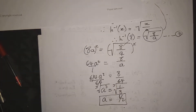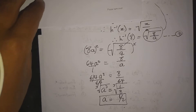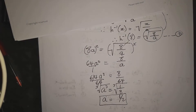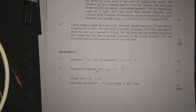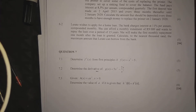So a = 1/2 is our final answer for 7.3. If you need clarity, please leave a comment in the comment section or check the description below for links to other videos. Thanks for watching!